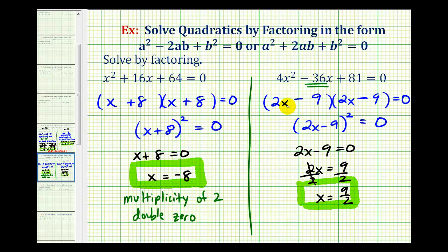Which again, because we had two factors of 2x - 9, we can say the solution has multiplicity of two or that it's a double root or double zero. I hope you found this helpful.